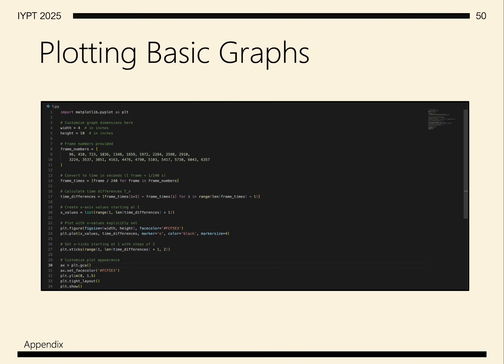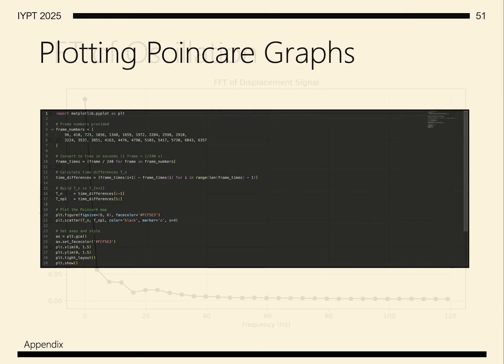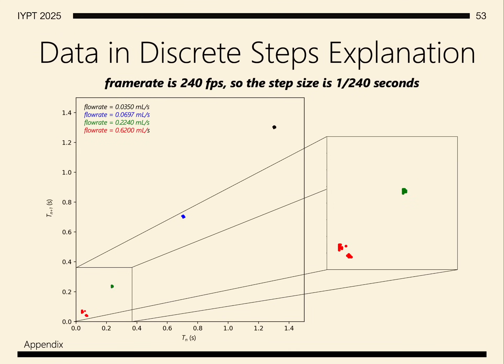You can plot the graphs using code in matplotlib. You may have noticed that the data are in discrete steps, and this can be explained because of the frame rate of the camera, where each frame is 1/240th of a second.